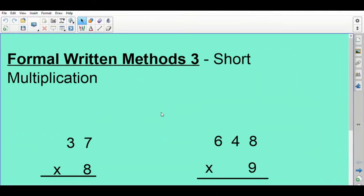So here we have our third lesson on the formal written methods, and this is short multiplication, as I said in the introduction. So a couple of examples. You can see here how we set it out. We put the larger number, the two-digit number on the top line, and below it we put the one-digit number, making sure we line up the units and the tens.